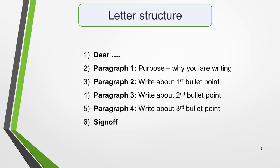Use this easy-to-remember six-part structure. Start with the greeting — Dear, whoever you're writing to. In paragraph one, state the purpose of the letter, that is your reason for writing. In paragraph two, write about the first bullet point. In paragraph three, write about the second bullet point. In paragraph four, write about the third bullet point. And finally, sign off your letter.